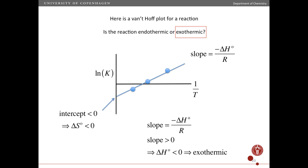Ready? Okay, so the answer here is exothermic. How do I know that? Well, the slope is positive, but the slope is minus the enthalpy change. So because the slope is positive, that means the enthalpy change is negative, and if the enthalpy change is negative, then that means I have an exothermic reaction.